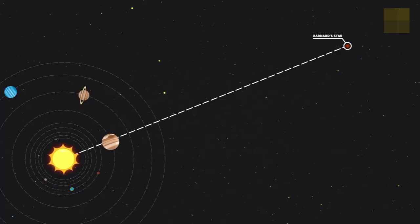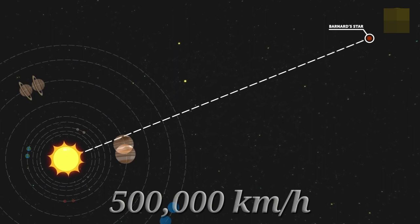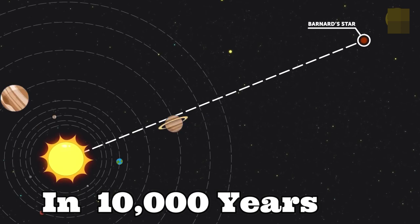This unparalleled apparent motion is a consequence of the proximity of Barnard Star and its high velocity of 500,000 km per hour relative to the Sun, and Barnard's star is getting closer to us every day.